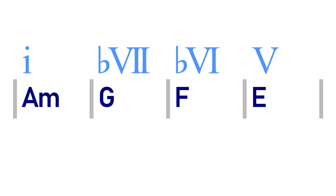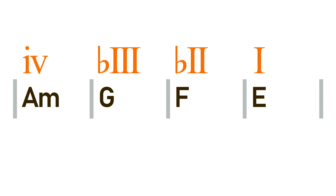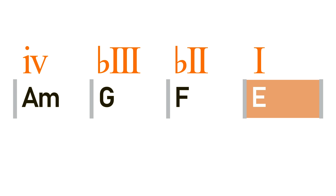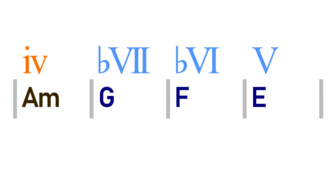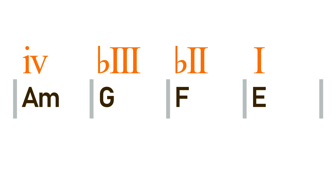However, in flamenco music, it's the last chord of this chord progression that's considered to be the tonic chord, meaning that we have chords four, three, two, one in E Phrygian Dominant. The exact same chord progression in both examples, but by treating a different chord as the tonic, we are hearing it in two different modes — harmonic minor and Phrygian Dominant.